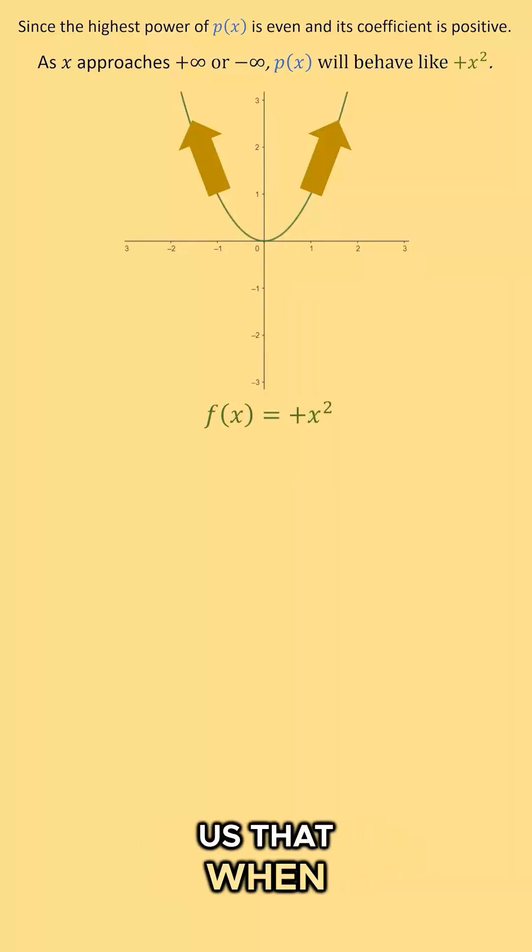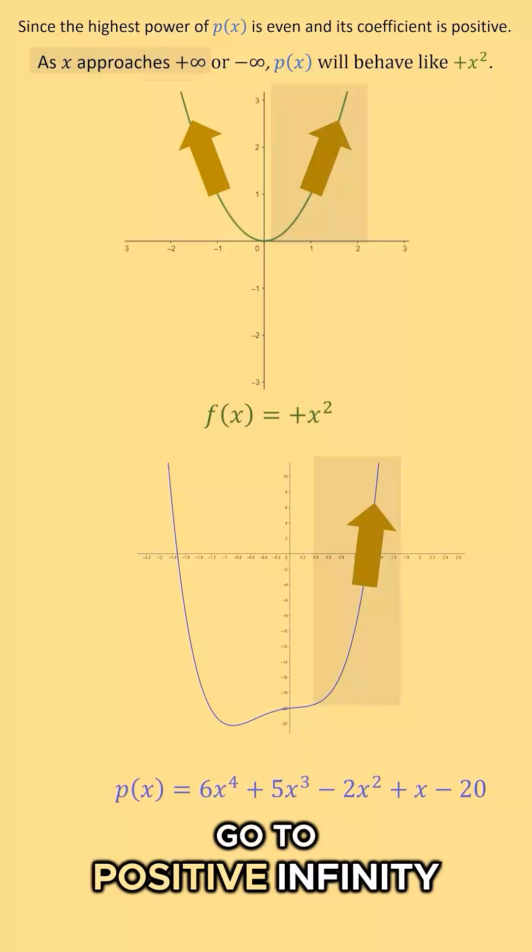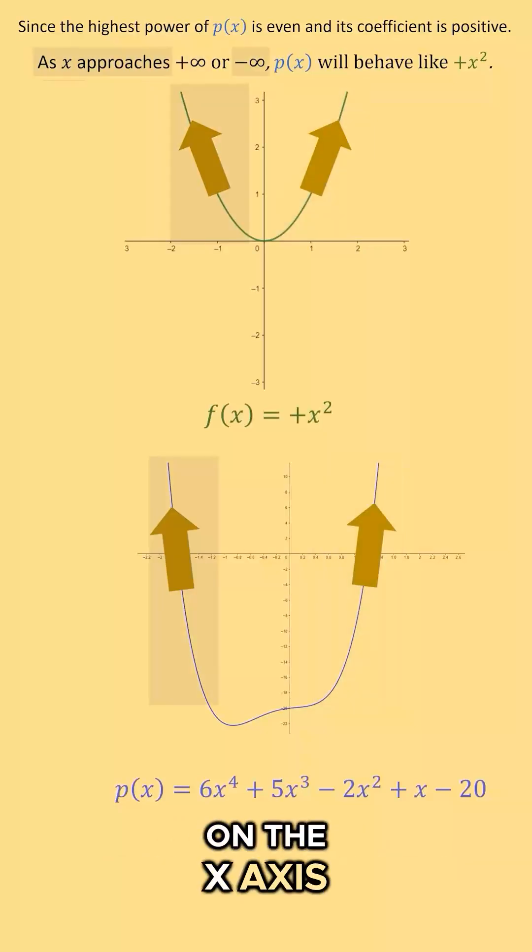Mainly, this just tells us that when we graph our function, as we go to infinity on the x-axis, our y values are going to go to positive infinity. And when we go to negative infinity on the x-axis, my y values are also going to go to positive infinity.